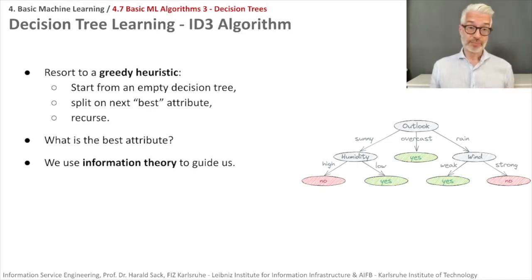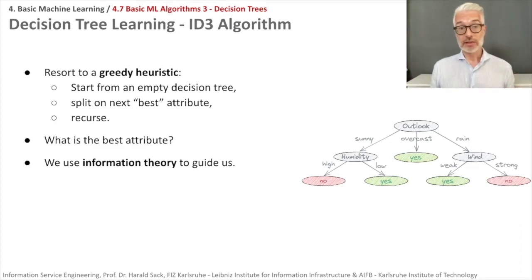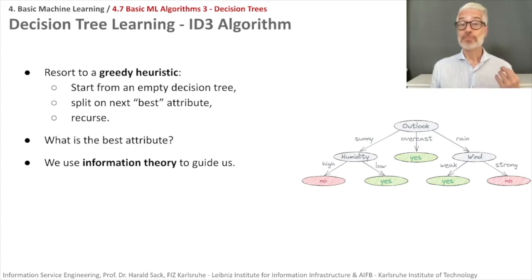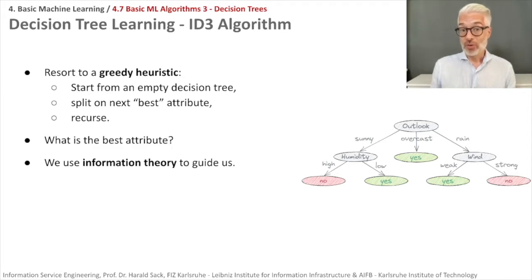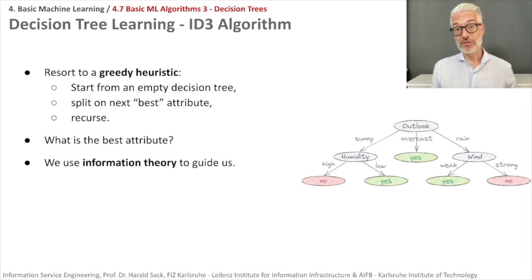So we have to approximate. We resort to a greedy heuristic that works quite easily — it's called the ID3 algorithm. It works as follows: we start from an empty decision tree and simply split on the next best attribute, then recurse. The only problem we have to solve is finding what is the best feature to split on. For that, we take help from information theory — specifically entropy, which we covered in the very first part of the lecture.